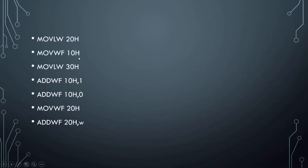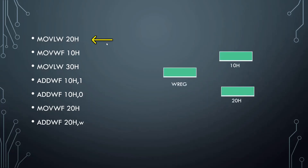Let's consider the sample code. In this case we will be using three registers. The working register is needed because we have to move values through it — we can't directly move a value to any other file register. So MOVLW 20h moves the value 20h to WREG. MOVWF 10h moves the value present in WREG to the file register at address 10h, so 10h now holds the value 20h.